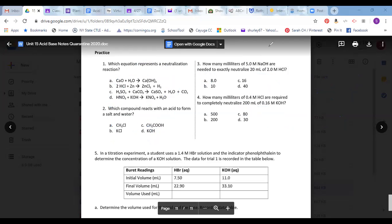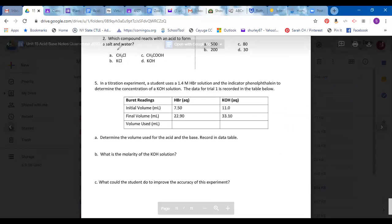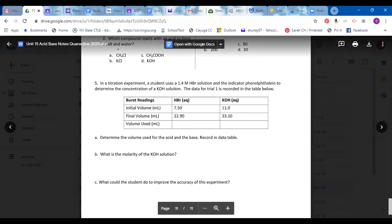And then on the last one, you are going to do the same thing, but they give you a data table. So you're going to finish the data table. So to figure out the volume used, it's final minus initial. So on the first one, I got 15.40. On this one, I got 22.10. So that's letter A.